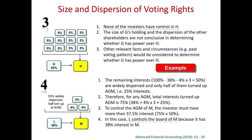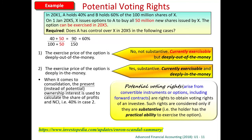Of course, we have to consider many other circumstances. But this can be one piece of evidence to demonstrate that we may have power over entity M. So we may consider size and dispersions. Another item to consider is the potential voting rights.